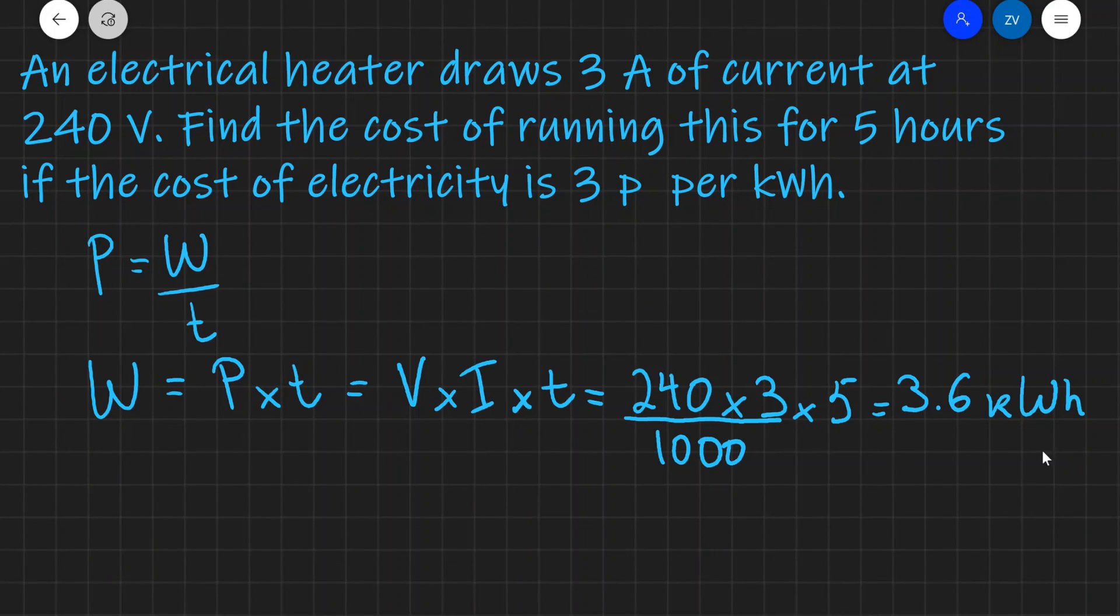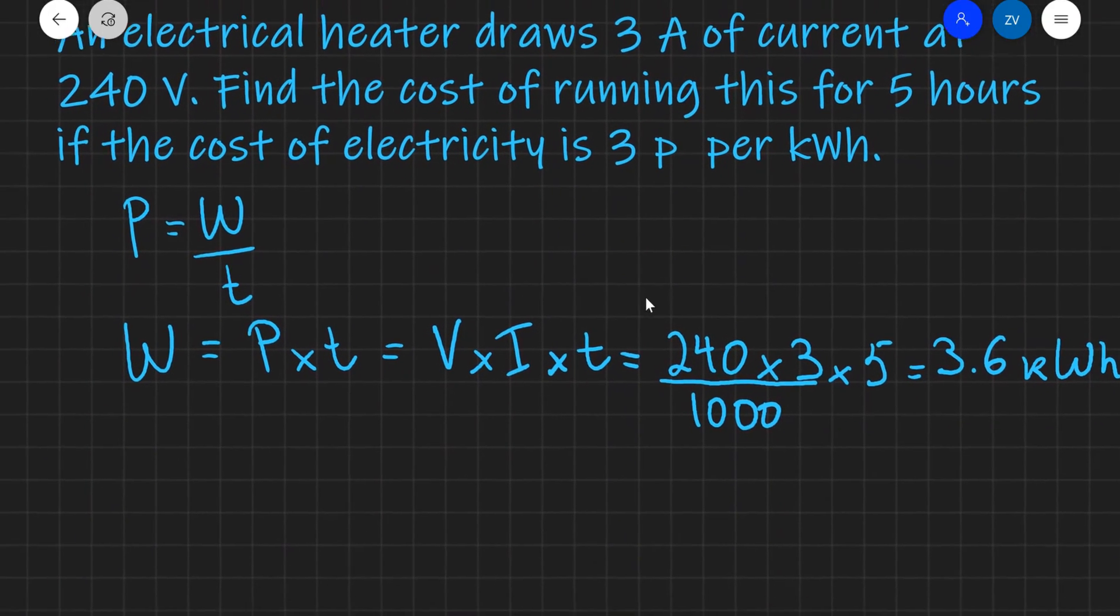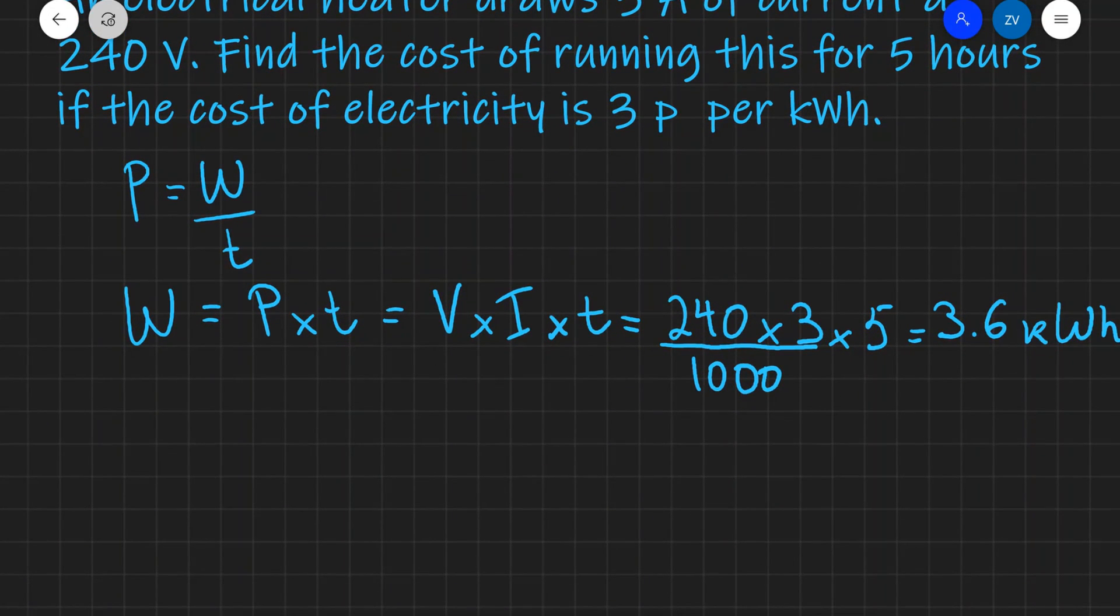If each of those kilowatt hours costs 3 pence, then the total cost will be equal to 3.6 kilowatt hours multiplied by 3 because each of them costs 3 pence, which is equal to 10.8 pence, which is approximately equal to 11 pence.